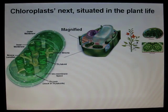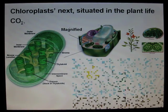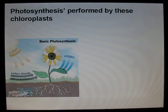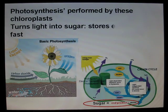Chloroplasts, situated in plant life — CO2 and water, take it in with the sunlight. Photosynthesis, performed by these chloroplasts, turns light into sugar, serves energy real fast. Cell parts, cell parts.